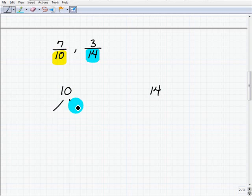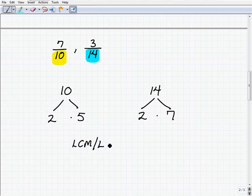All right, so 10 prime factors as two times five and 14 prime factors as two times seven. Okay, so our LCM or LCD in this case, because we're talking about the denominators, same thing.